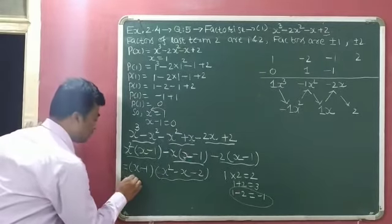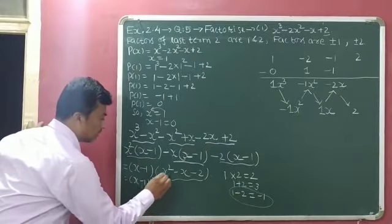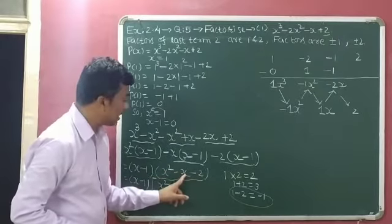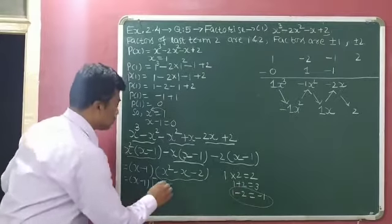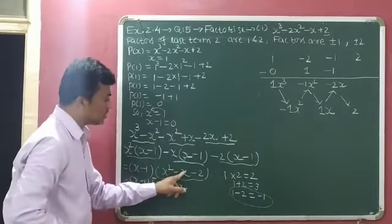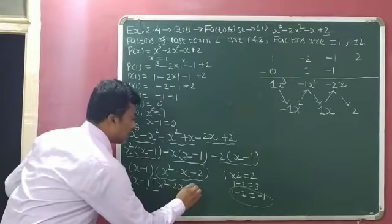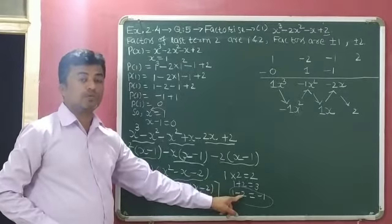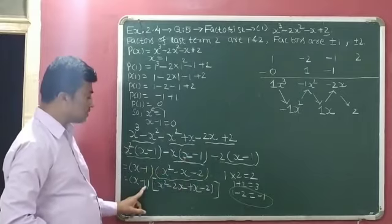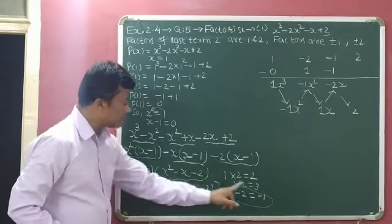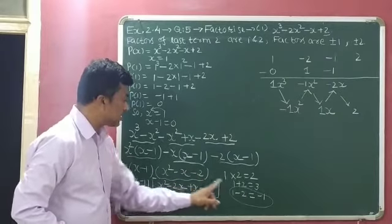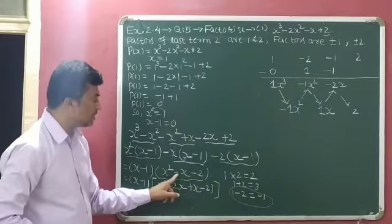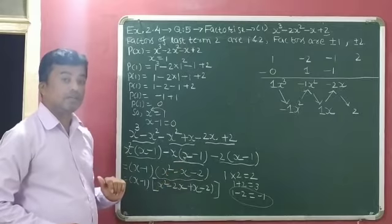Now see children: the first term is the same — x minus 1. In the second term x square, then x square. Now minus x — this middle term we have to split. X multiplied with minus 2 gives minus 2x, and x multiplied with plus 1 gives x. So minus 2x plus x — its answer is minus x. So our arrangement is right.